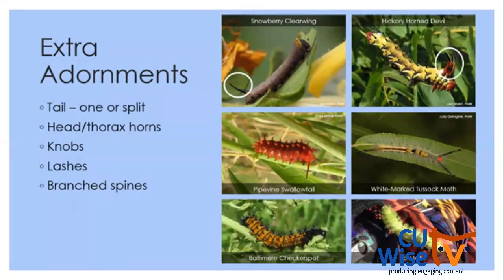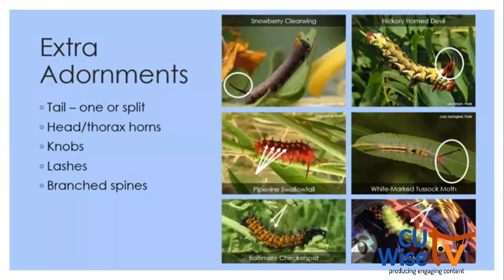There are also thorax horns, like in the hickory horns devil. Caterpillars can have knobs — projections along their body, like in the pipevine swallowtail. Another hair feature is a lash — a really exaggerated dense clustering of hairs, again seen in the white-marked tussock moth. Finally, caterpillars can have spines. If you see a caterpillar with spines, I urge you not to touch it with bare hands. Speaking from experience, an io moth caterpillar had a pretty nasty sting — I didn't realize it was on my backpack — it was very intense pain.